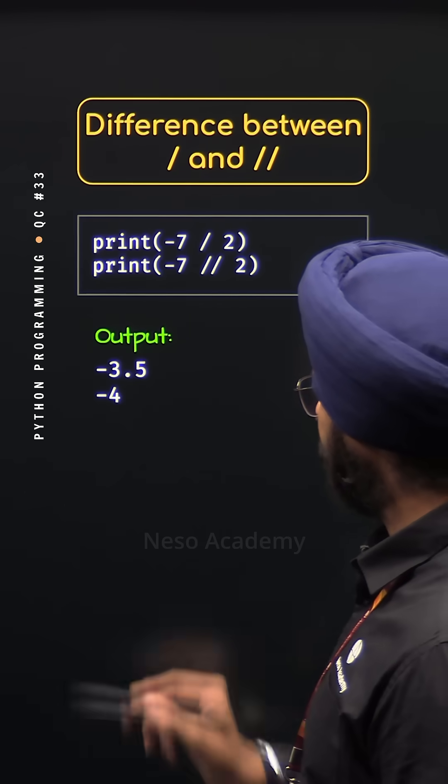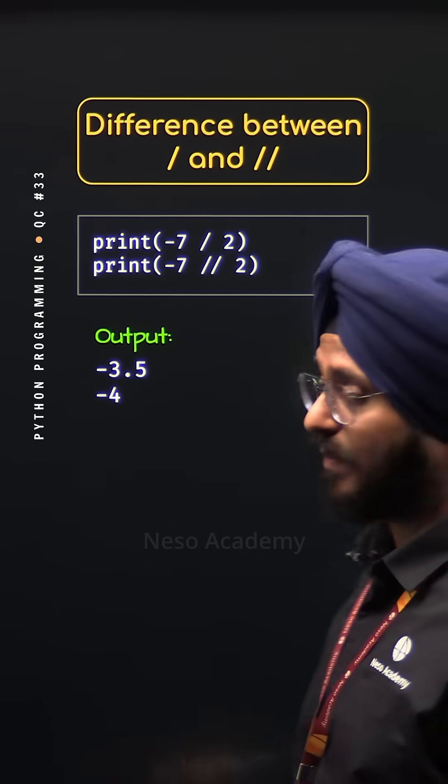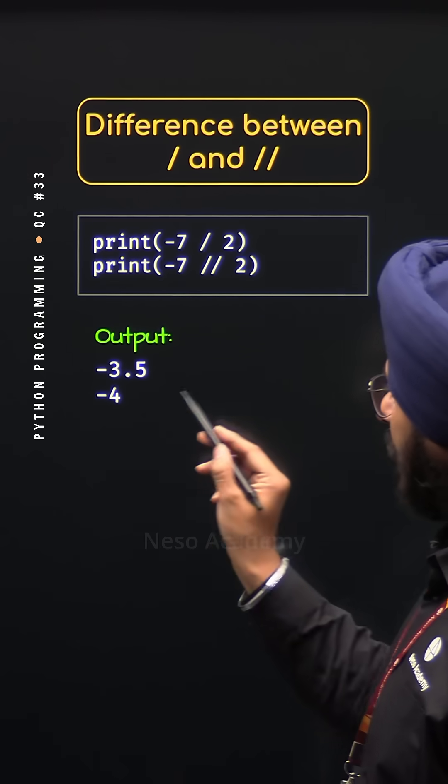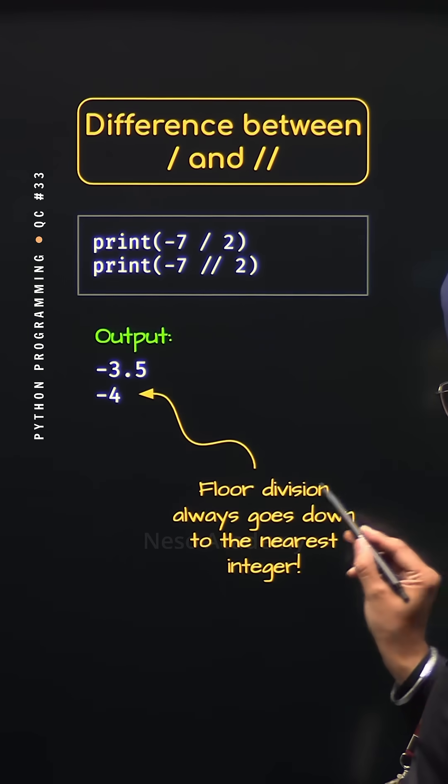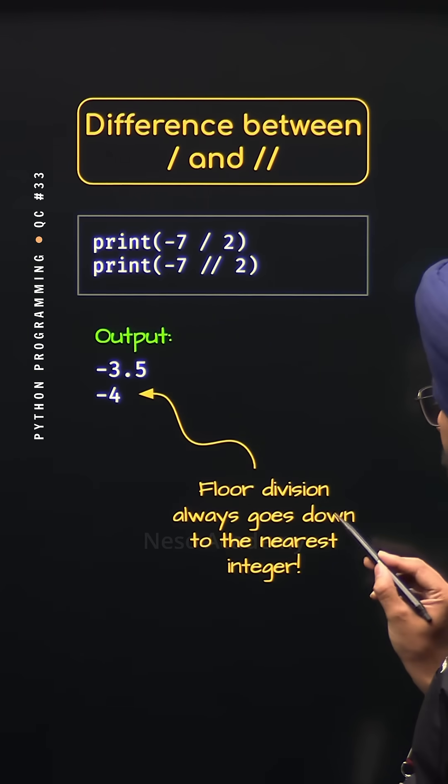Minus 3.5 is expected, but minus 4 is not expected. We were expecting minus 3. We are getting minus 4 because floor division always goes down to the nearest integer.